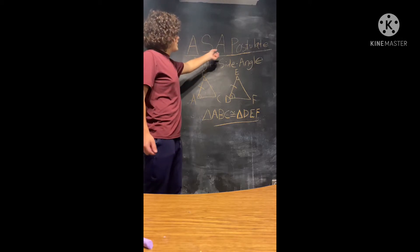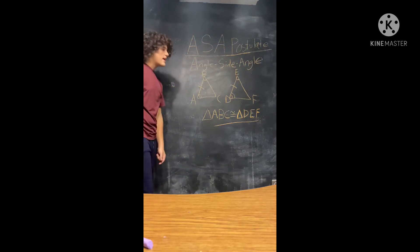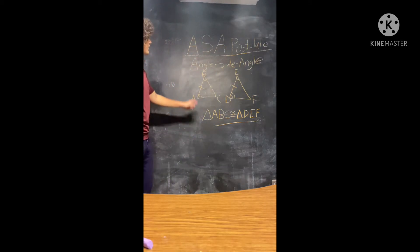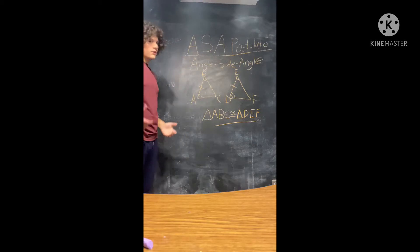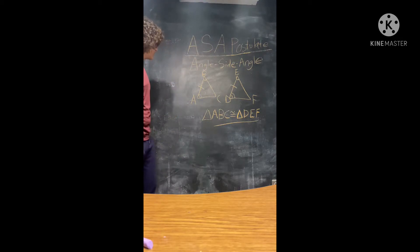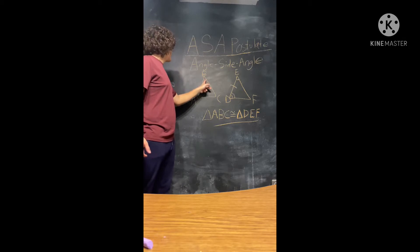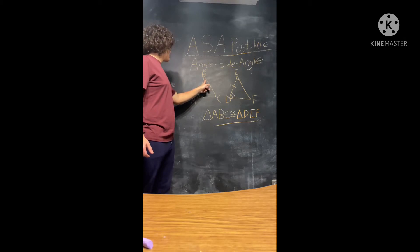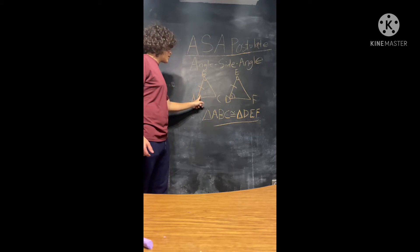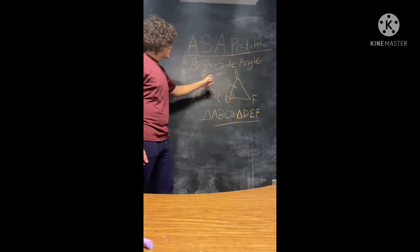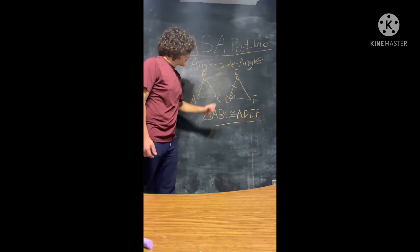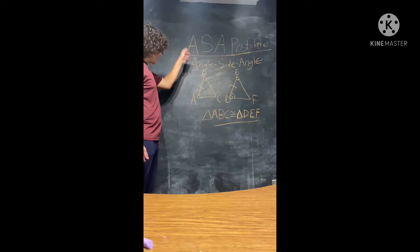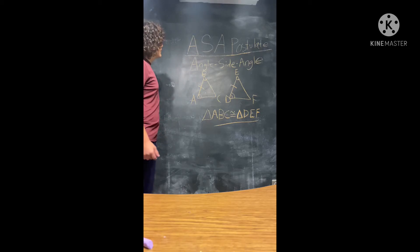A-S-A postulate. A-S-A stands for angle, side, angle. What this postulate says is that if we have a triangle with an angle, an included side, and another angle, and then we have another triangle with an angle, an included side, and an angle, then those triangles, via A-S-A, can be proven congruent.